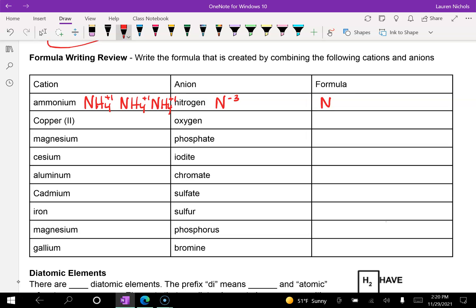So when we write our formula, I put NH4, which I wrote three times, but if I just leave the three there, it looks like I have 43 hydrogens. So we put ammonium in the parentheses to show that I have three of all of that's in the parentheses. And then I have nitrogen just one time.